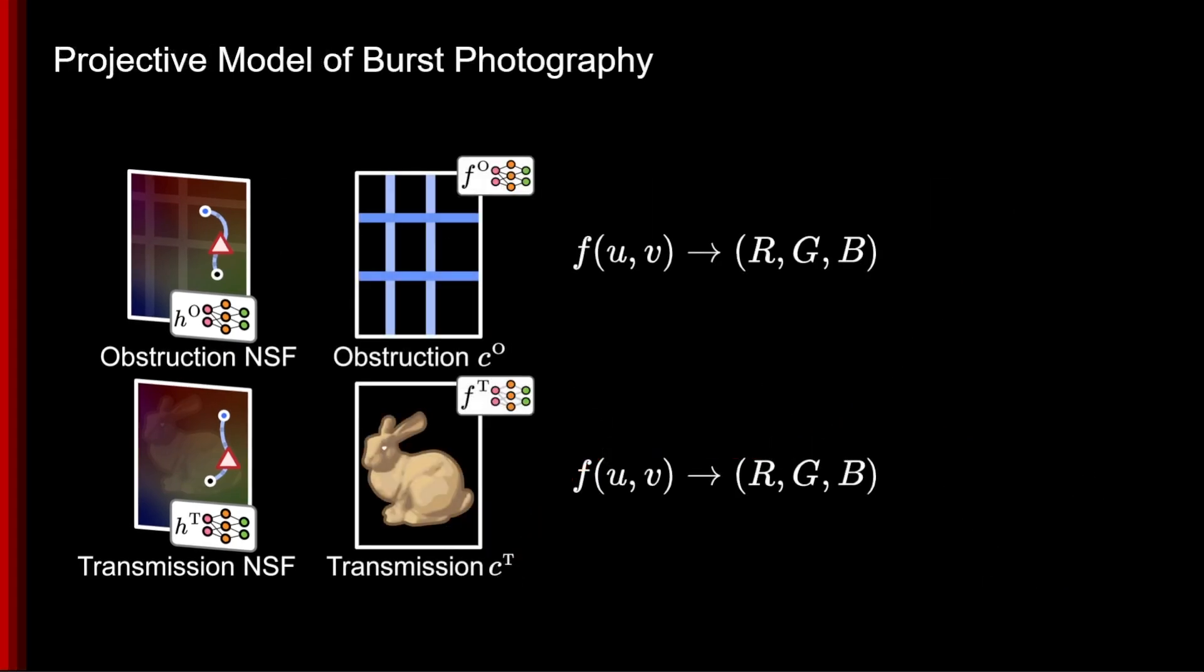With two neural field image models for the obstruction and transmission layers, the shifted intersection points now sample the correct corresponding locations in these images.